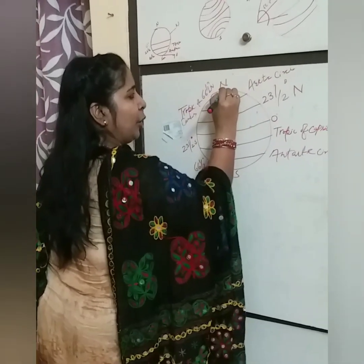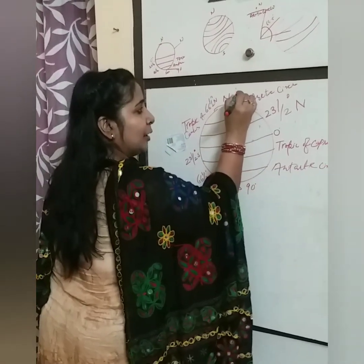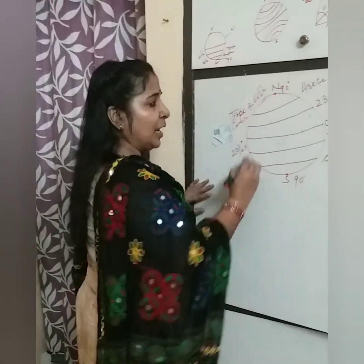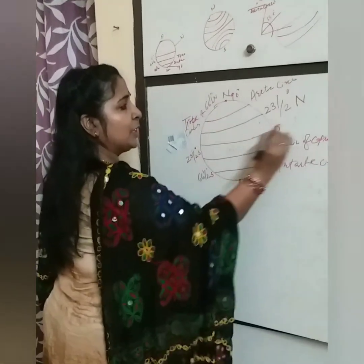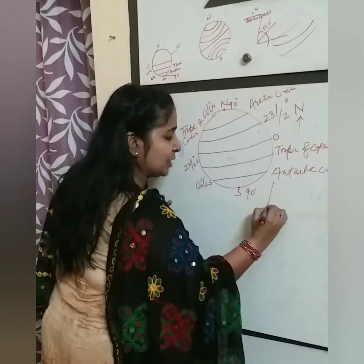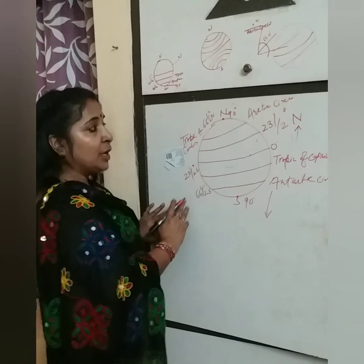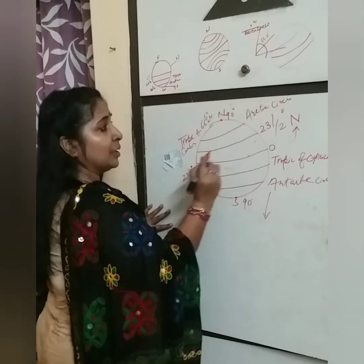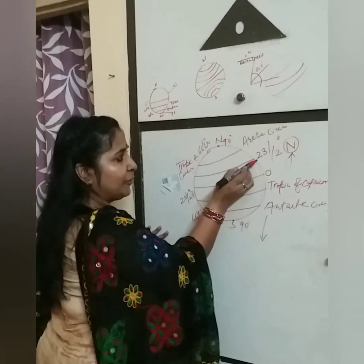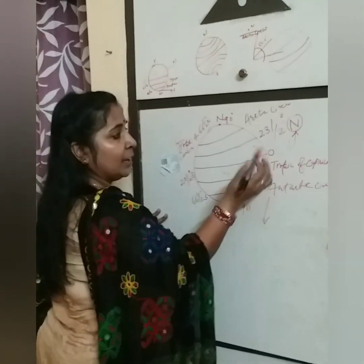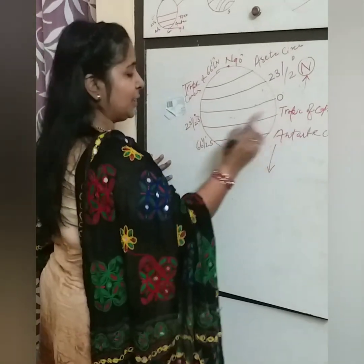The North Pole and South Pole are at 90 degrees. Dear students, parallels of latitude represent the angular distance of a place on the earth from the equator, measured towards the north or towards the south. Whenever we state the important parallels of latitude, we must include the direction — north or south — because they are at equal distances on both sides: for example, 0 to 23.5 degrees north, and 0 to 23.5 degrees south. The Tropic of Cancer is 23.5 degrees north, and the Tropic of Capricorn is 23.5 degrees south.